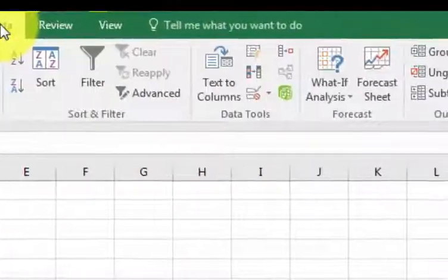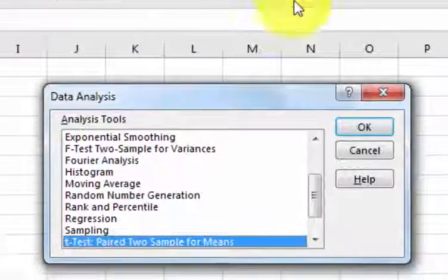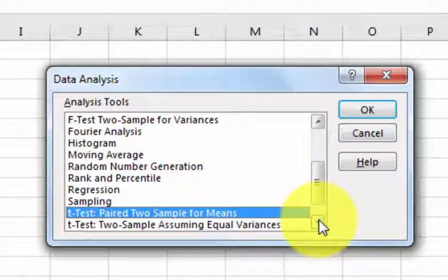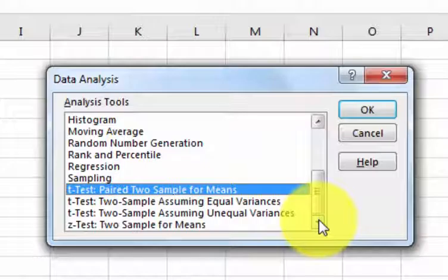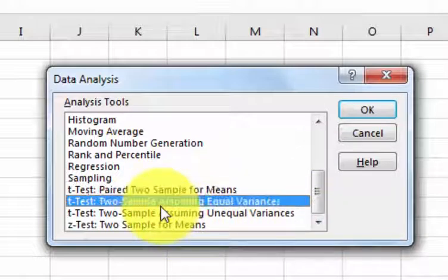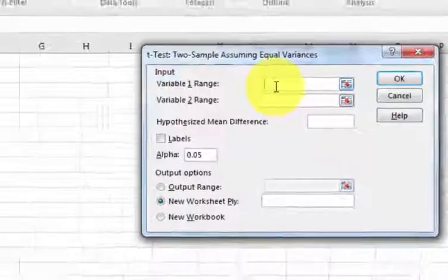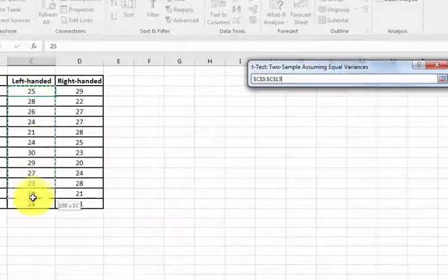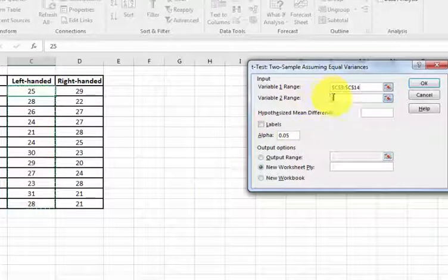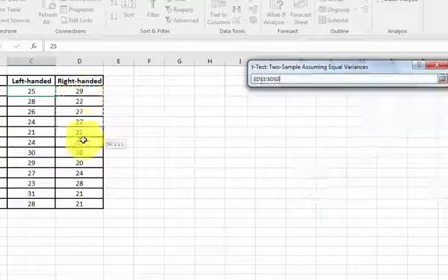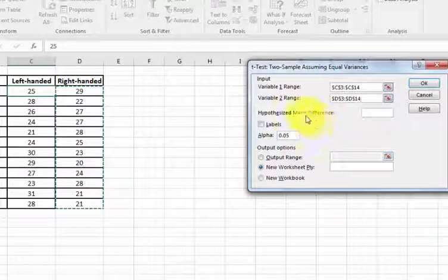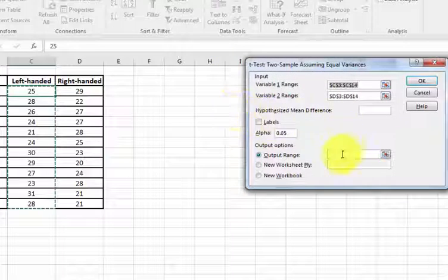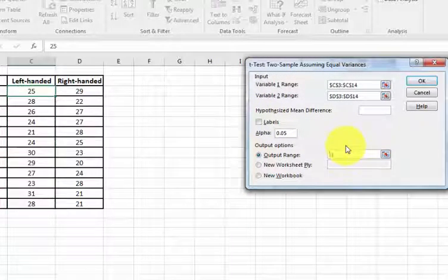Again, we're going to go to data, analysis, t-test. This is an independent sample t-test. We're going to assume the variances are equal. Our first range is our lefties, our second range is our righties. And I'm going to put the output right around h5 so I can see it all on the same page.